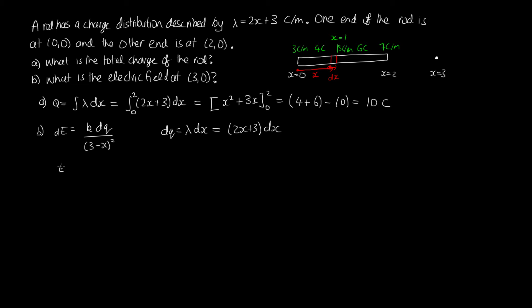So E equals the integral of k times (2x plus 3) dx divided by (3 minus x) squared, integrated along the rod from zero to two.